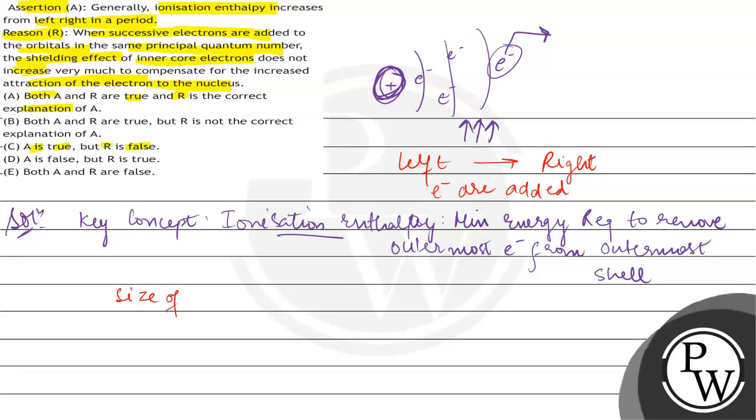the size of atoms decreases on going from left to right. So the size decreases.